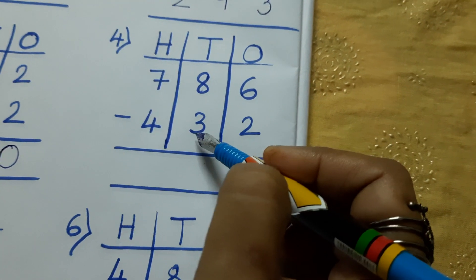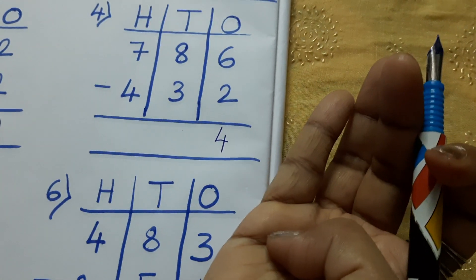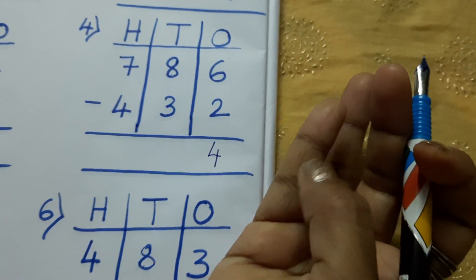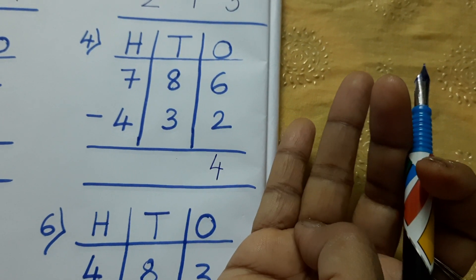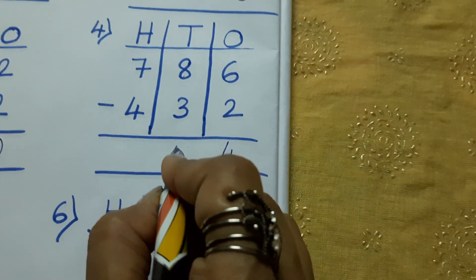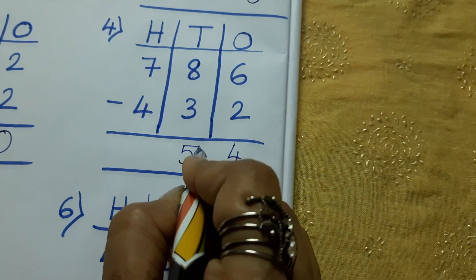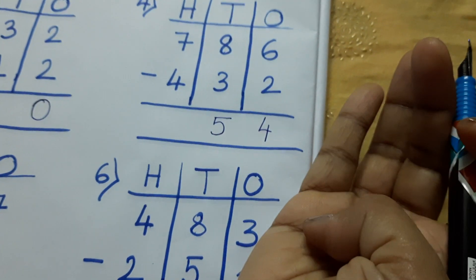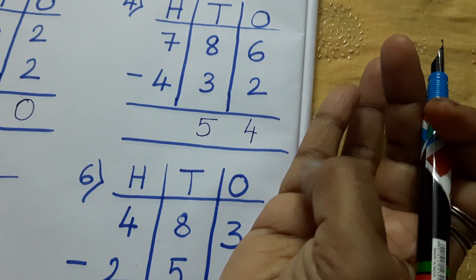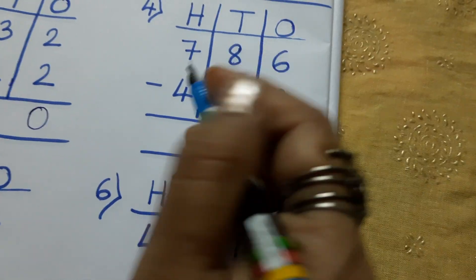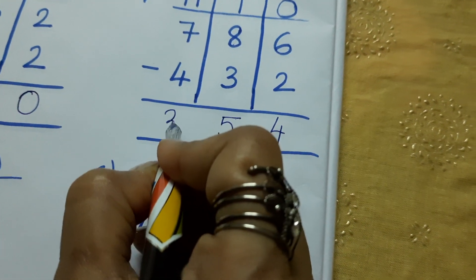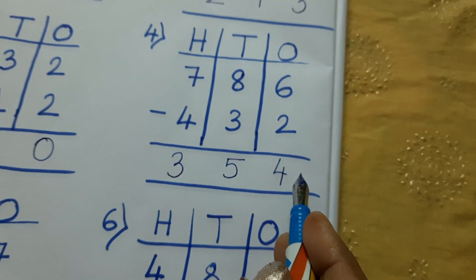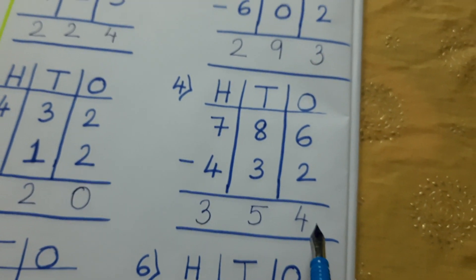8 minus 3. I will take here 3. After 3, 4, 5, 6, 7, 8. Answer is 5. Now, 7 minus 4. 4, 5, 6, 7. 3. Answer. So, 3, 5, 4 is the answer.